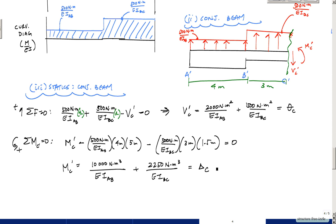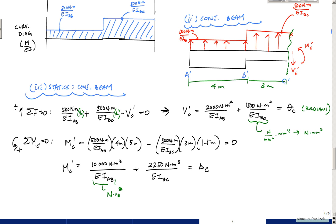Checking units: EI has units of newton per millimeter squared times millimeters to the fourth, giving newton millimeter squared. For the slope calculation, the units work out to leave theta dimensionless — in radians. For the deflection calculation, the units of the numerator are force times length cubed, and dividing by EI gives units of length, so delta C is in meters. This makes sense.